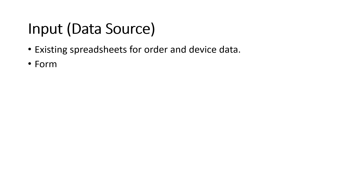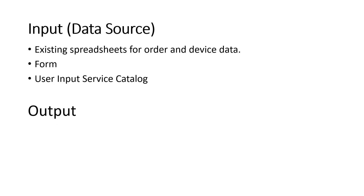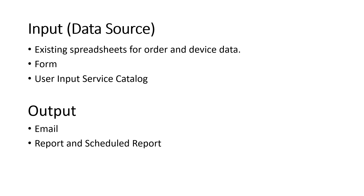With the Service Catalog, external users can directly raise requests. For outputs, the application will generate emails for different phases to different teams, and reports and scheduled reports will be sent to management so they can track how the process is improving over time.